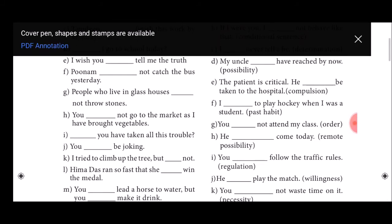G sentence: You dash not attend my class. Order. One is should or must. So you must not attend my class or you should not attend my class. H sentence: He dash come today. Within bracket remote possibility, less possibility. May or might. He may come today or he might come today.